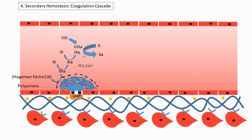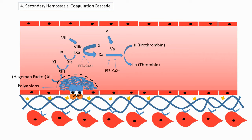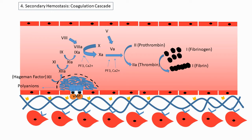This step requires platelet factor 3 and calcium. Activated factor 10 then uses factor 5 as a coenzyme to convert factor 2 into its active form, called thrombin. This step also requires platelet factor 3 and calcium. Thrombin then converts fibrinogen into fibrin — it acts as an enzyme converting soluble fibrinogen into long, sticky threads of insoluble fibrin, essentially attaching pieces of fibrinogen together to form long fibrin threads.